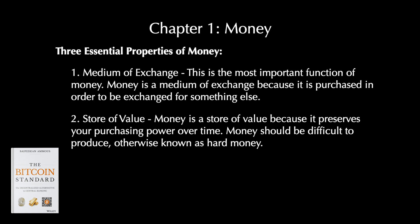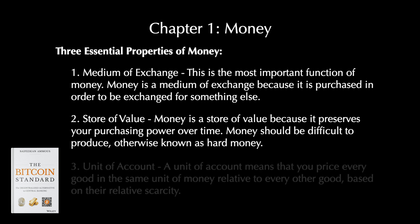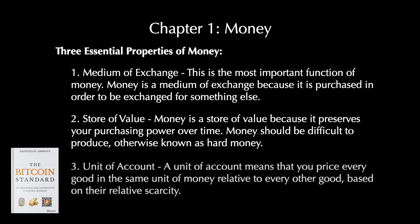The implications of hard or easy money go far beyond financial wealth. Those who choose a good store of value are much more likely to plan for the future than those who choose bad stores of value. The third essential property of money is a unit of account, meaning you price every good in the same unit of money relative to every other good, based on their relative scarcity. Money is the unit of account because everything is priced in money, not in terms of other goods, which would get extremely complicated.